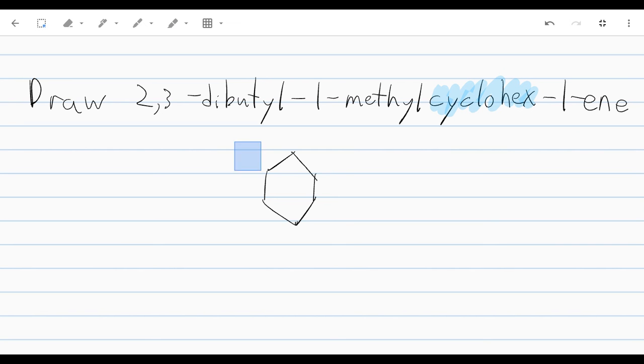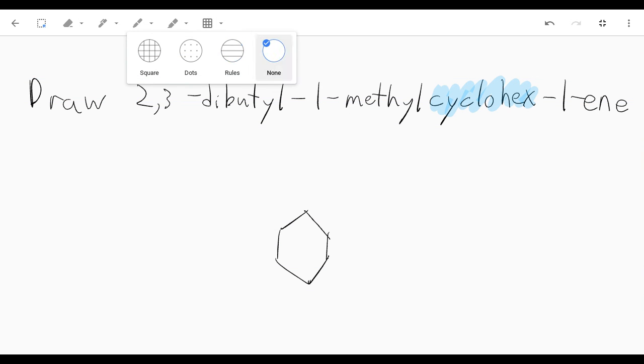I'm just going to move this down so it's out of the way a little bit, then we don't run into anything. Now that we have our base down, we know that this is cyclohexane. We want to start adding stuff in.